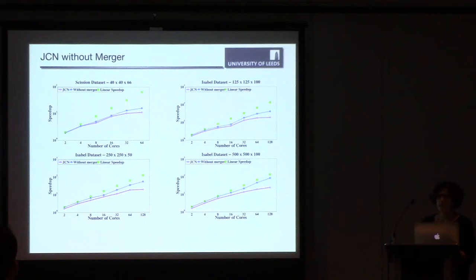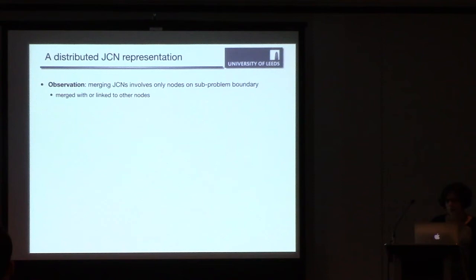And you can see, especially in the Isabel data set, full resolution that we got a much better speedup if we don't need to do a merge phase. It's almost like four times the speedup. This further motivates having a distributed representation of JCN as it's already in computational topology. People have been looking into finding distributed representation of data structures.